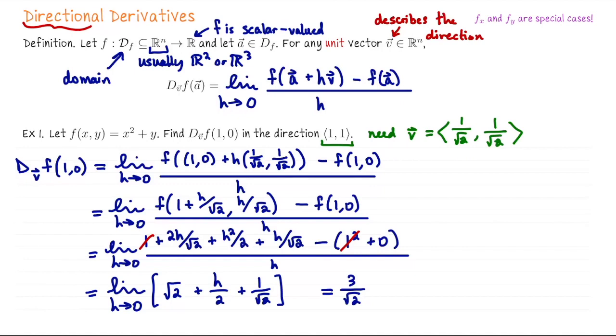So (1, 1) is our sense of direction, but in order to do the computation, we needed to take that direction and make sure we describe it with a unit length vector.